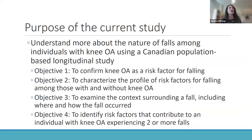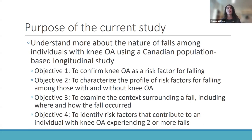The purpose of the current study was to better understand the nature of falls among individuals with knee OA using a Canadian population-based longitudinal study. We had four main objectives: first, to confirm knee OA as a risk factor for falling in our specific sample; second, to characterize the risk factor profile for falling separately among those with and without knee OA; third, to examine the context surrounding a fall, including where and how it occurred; and fourth, to look specifically at risk factors contributing to an individual with knee OA experiencing two or more falls.